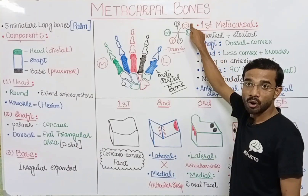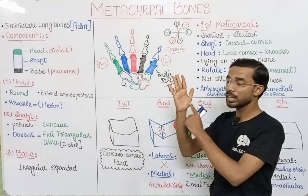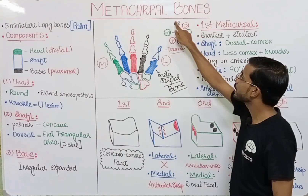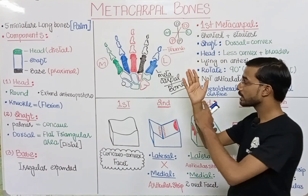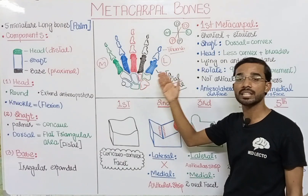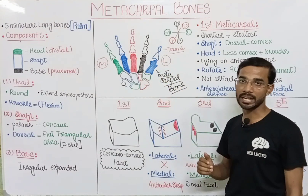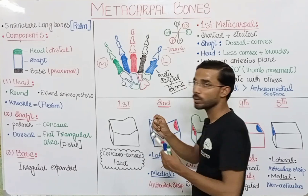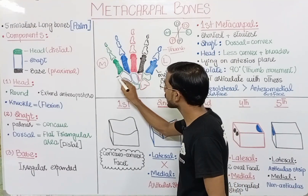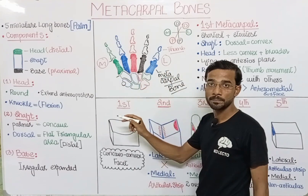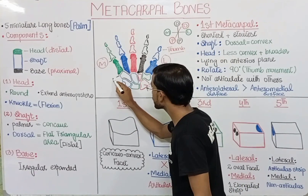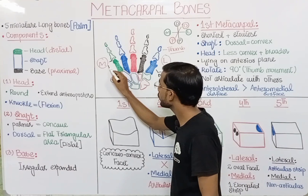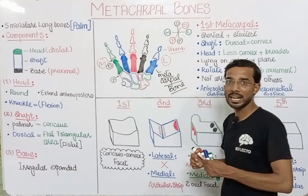Next is the dorsal and palmar side. The palm side will be the palmar side, and the opposite will be the dorsal side. Also important are distal and proximal. The part away from the center of the body is called distal, and the part near to the center of the body is called proximal.